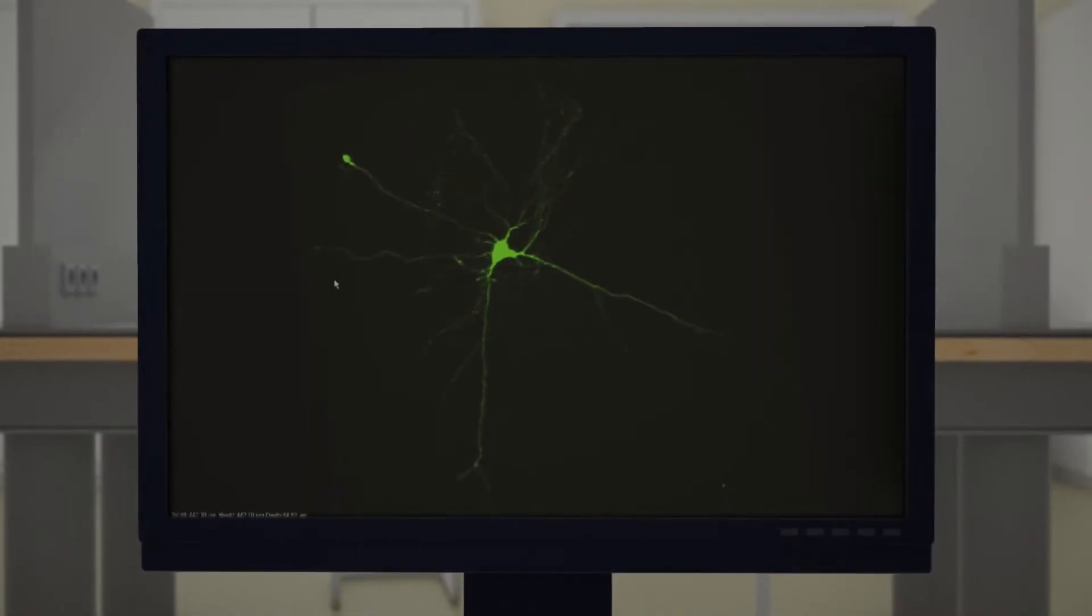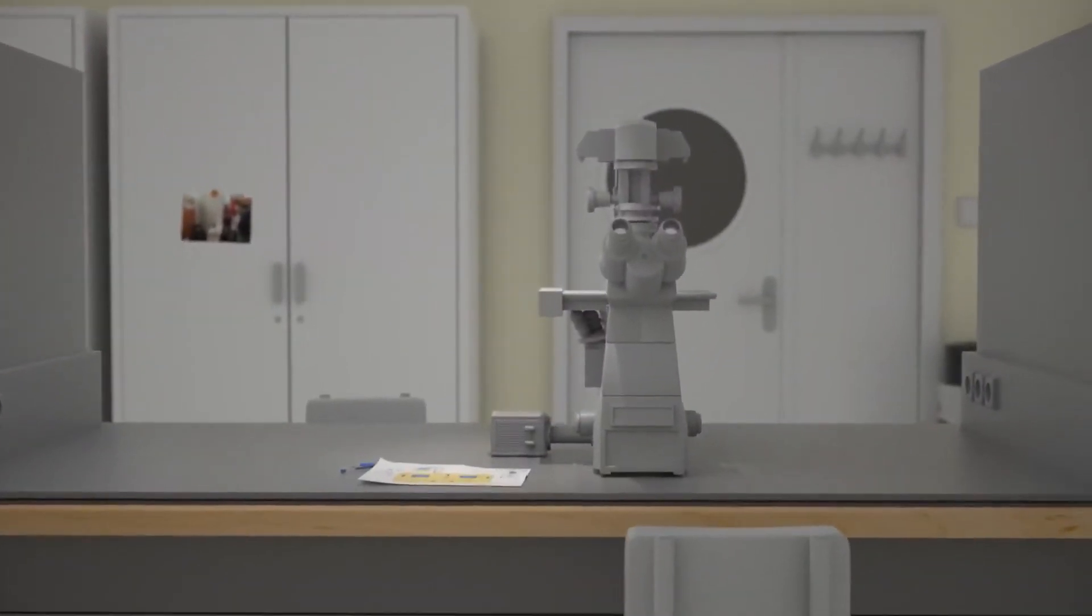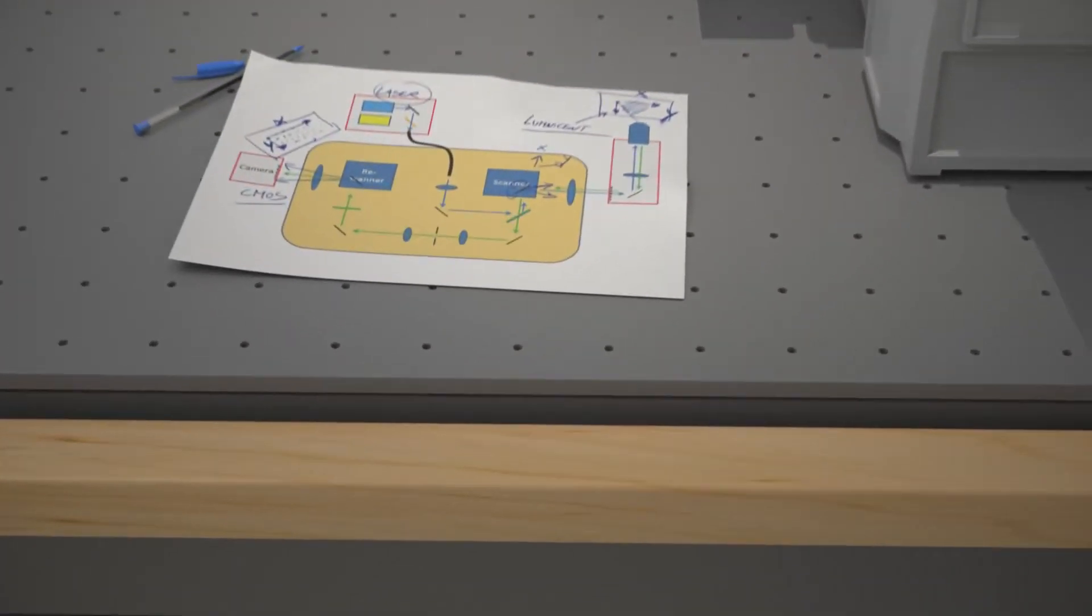And this is the same cell imaged with a confocal microscope, which clearly shows the 3D structure of the cell. But we can make this image sharper and smoother by using the Rescan Confocal Microscopy Technology, or RCM.